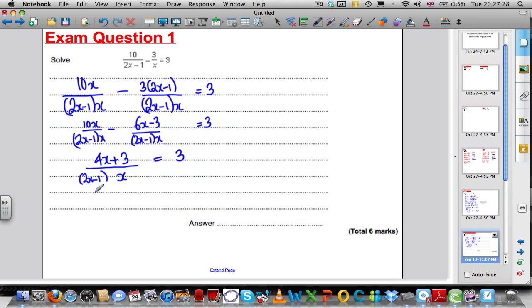I don't like x's on the bottom, so multiply both sides by 2x minus 1 and x. So you get 4x plus 3 is equal to 3, 2x minus 1 times x.